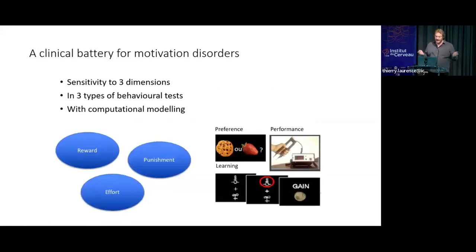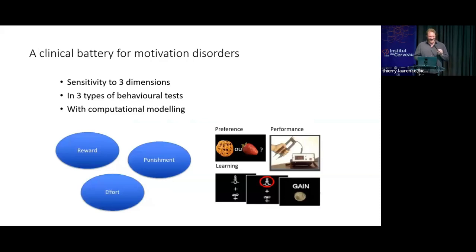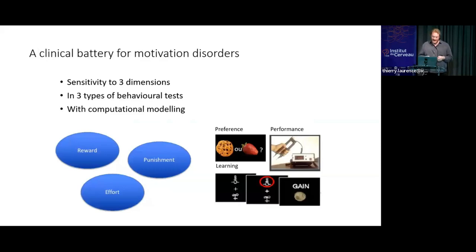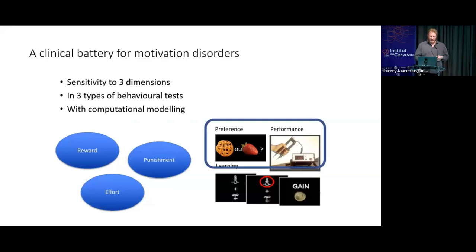In order to address that, especially Matthias in the lab — but I jumped in — we built a clinical battery to dissect and evaluate motivation disorder, including an evaluation of sensitivity to three dimensions: reward, effort, and punishment, with three types of behavioral tests — preference, performance, and learning tests — with computational modeling. Today I will talk mainly about preference and performance tasks in depression.